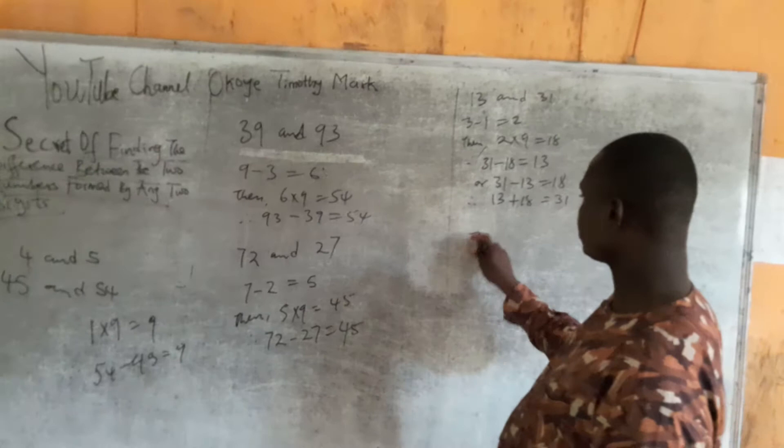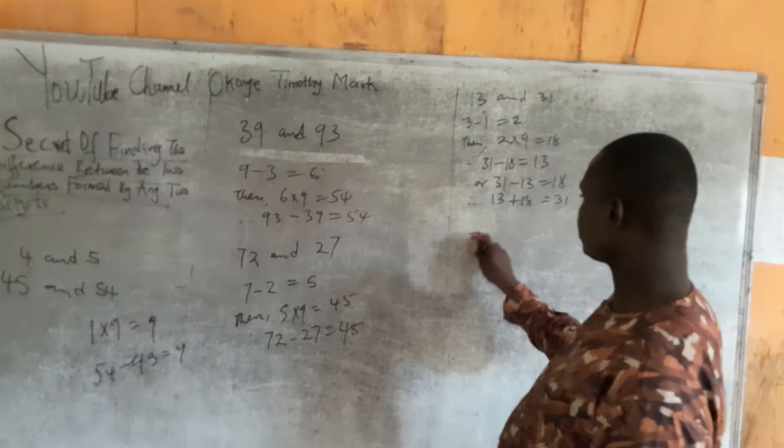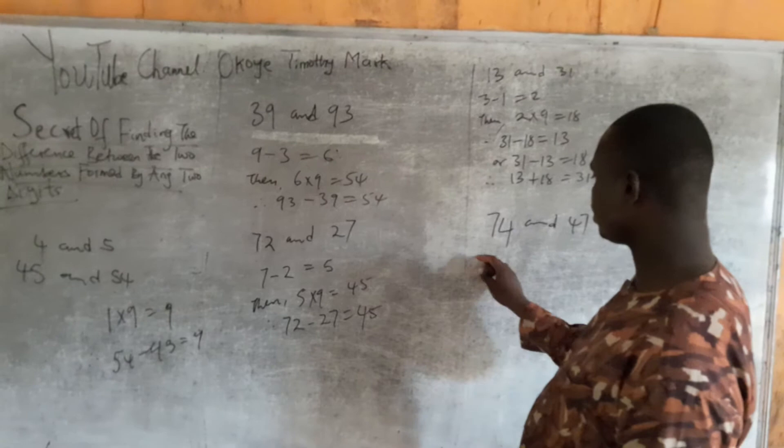Another example I can give you is something like 74 and 47. You can say 7 minus 4, that gives you 3.